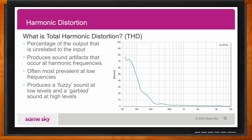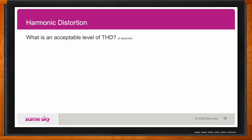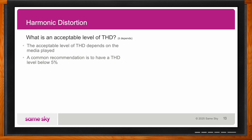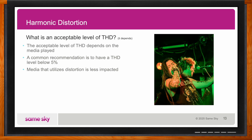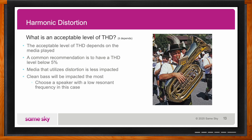How do we define what level of THD is acceptable? The acceptable level really depends on the media being played. A general recommendation is to keep THD below 5%. Media that utilizes distortion will be less impacted — for example, rock or metal music — whereas the clean bass of polka music will be impacted the most. In that situation, it would be best to choose a speaker with a low resonant frequency.